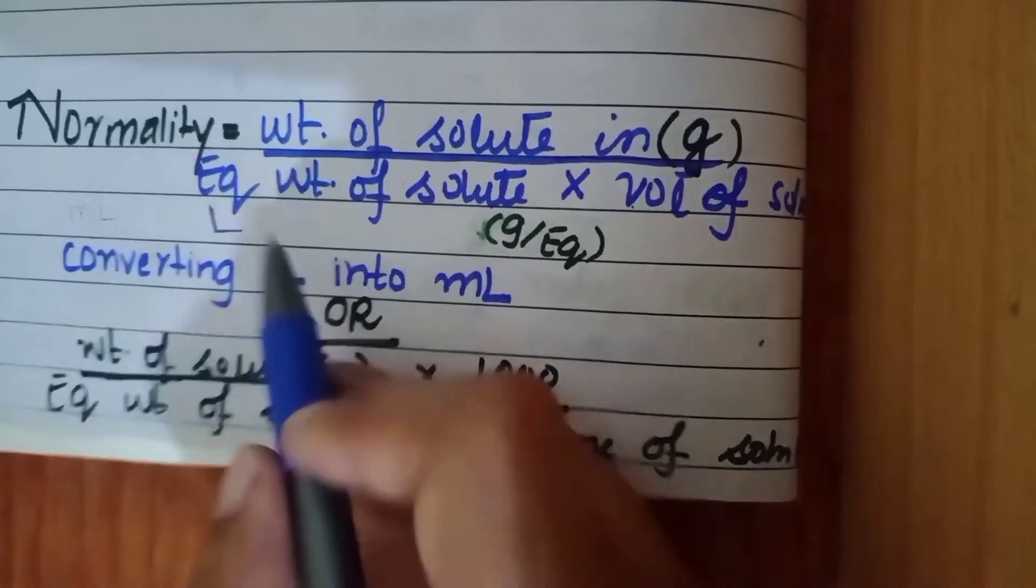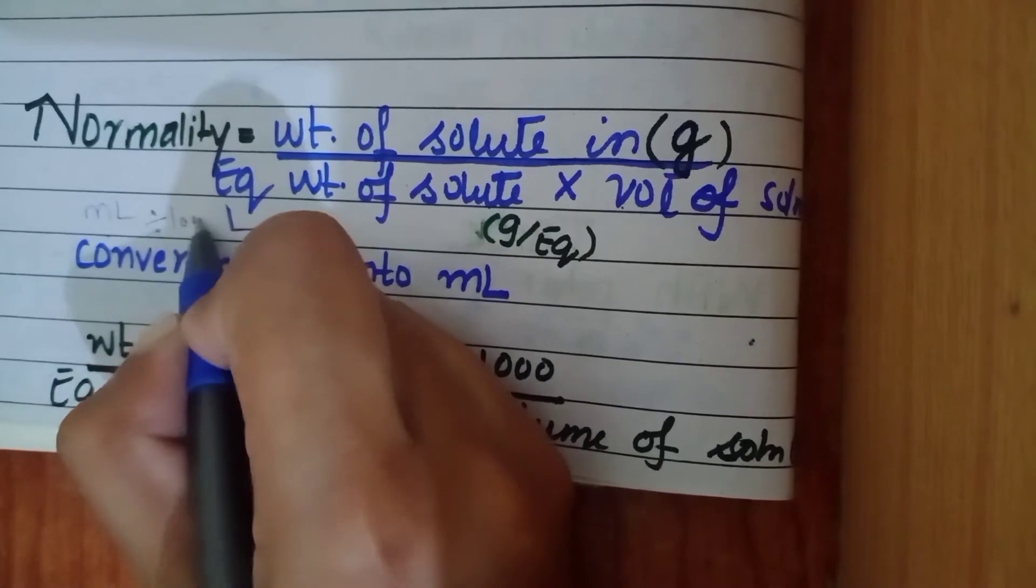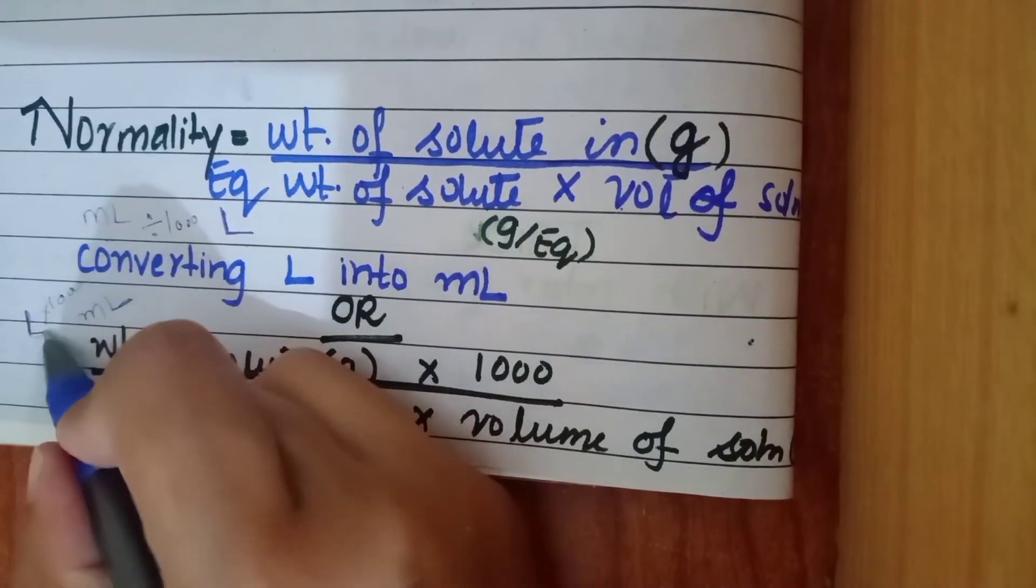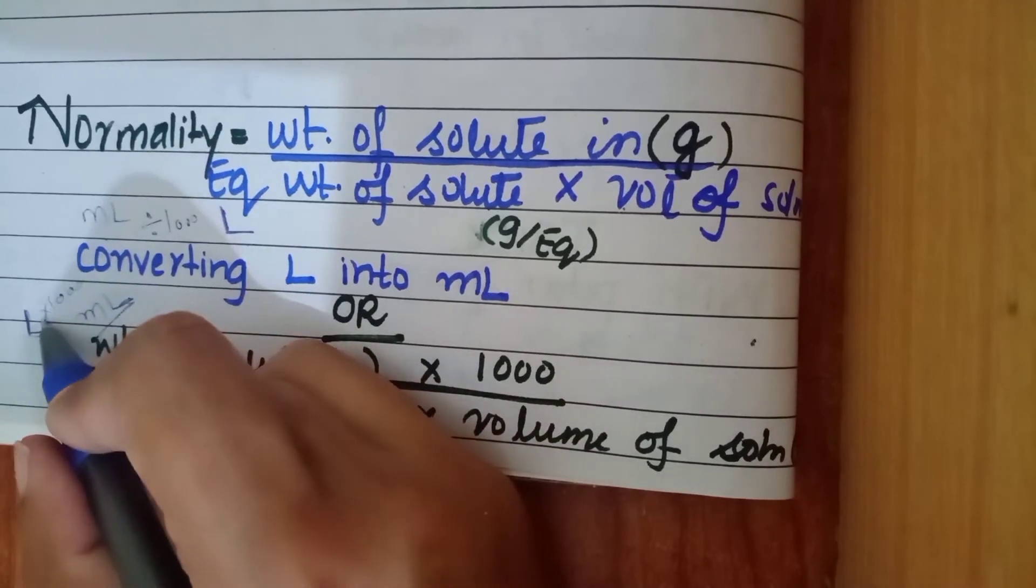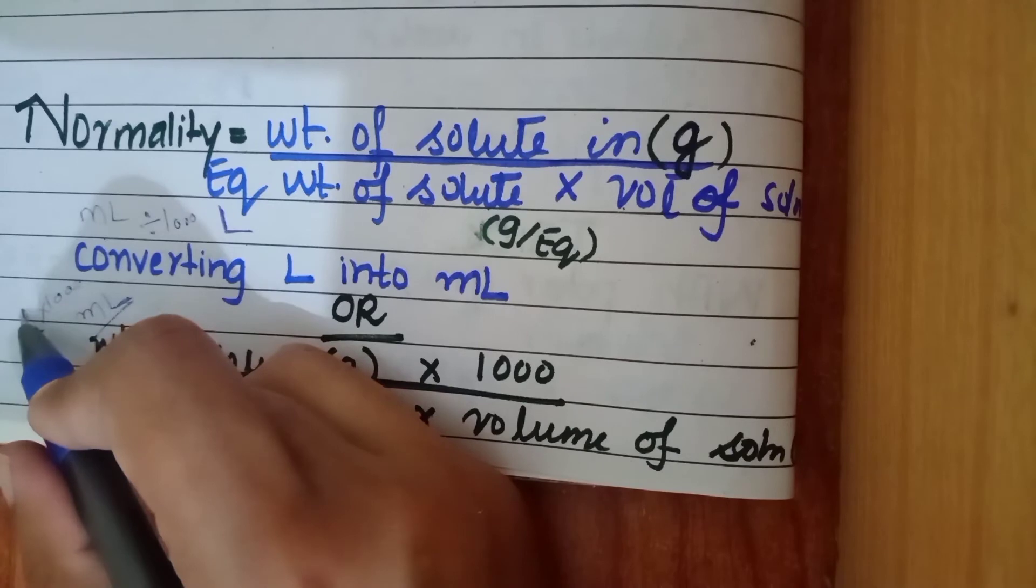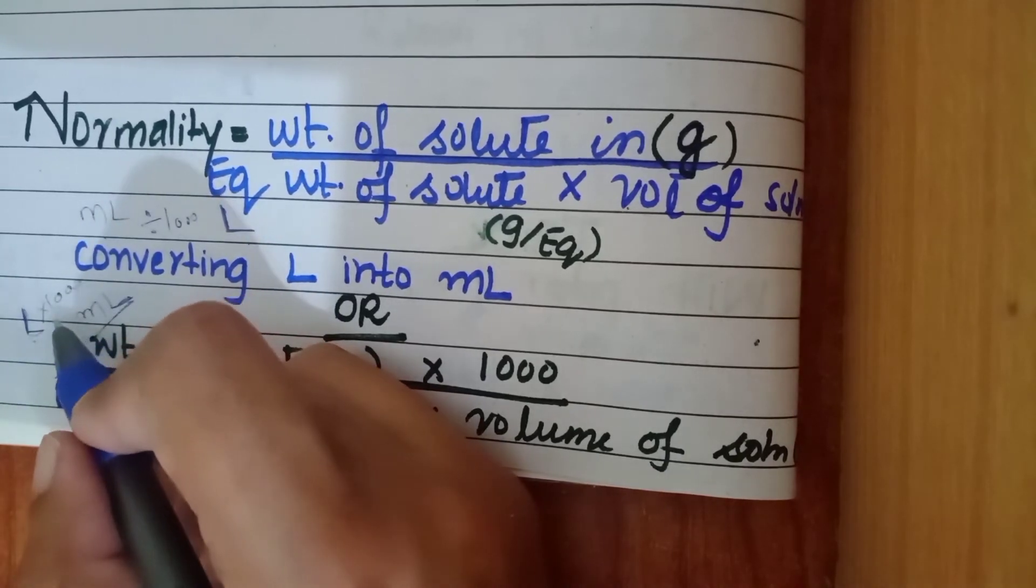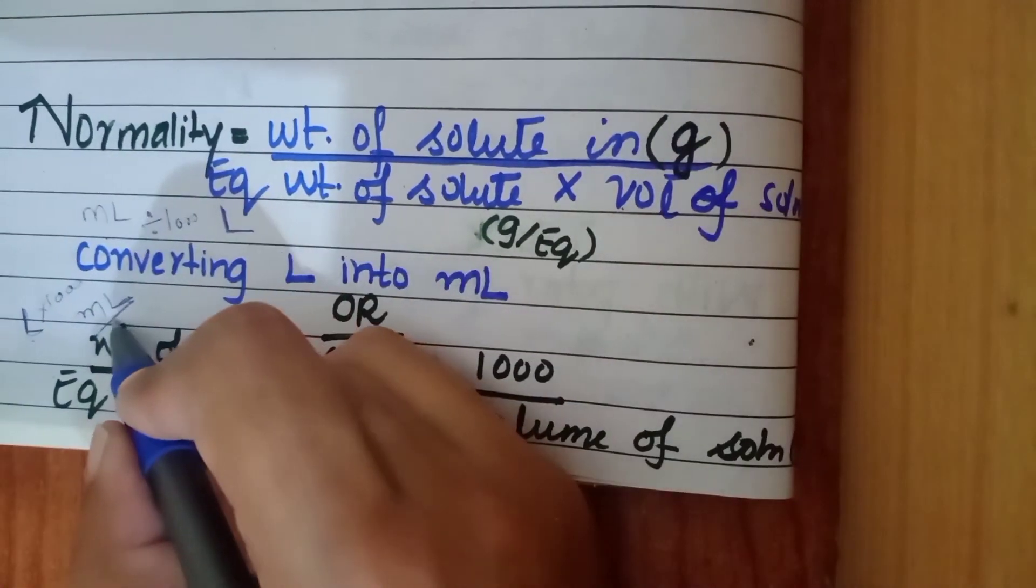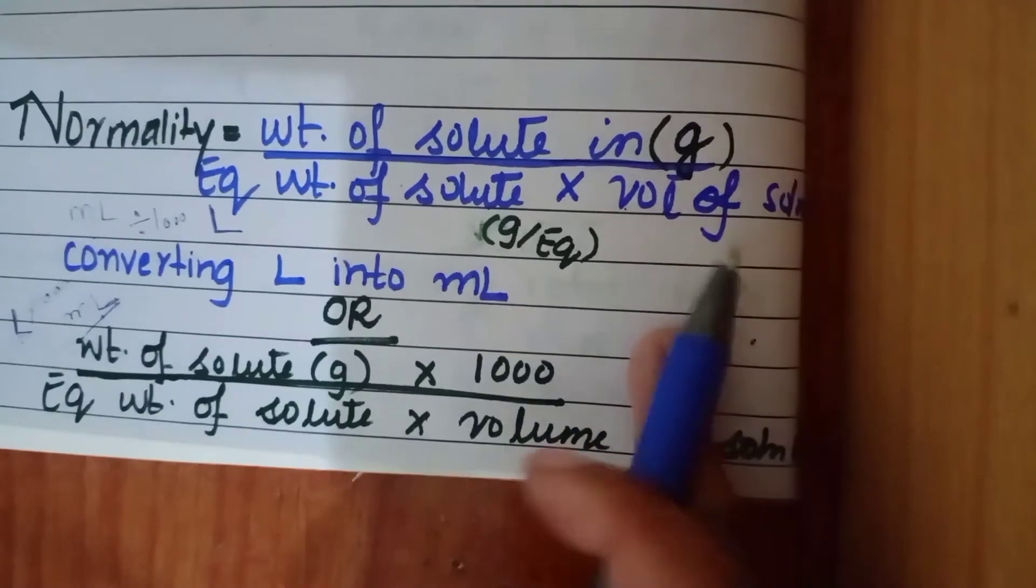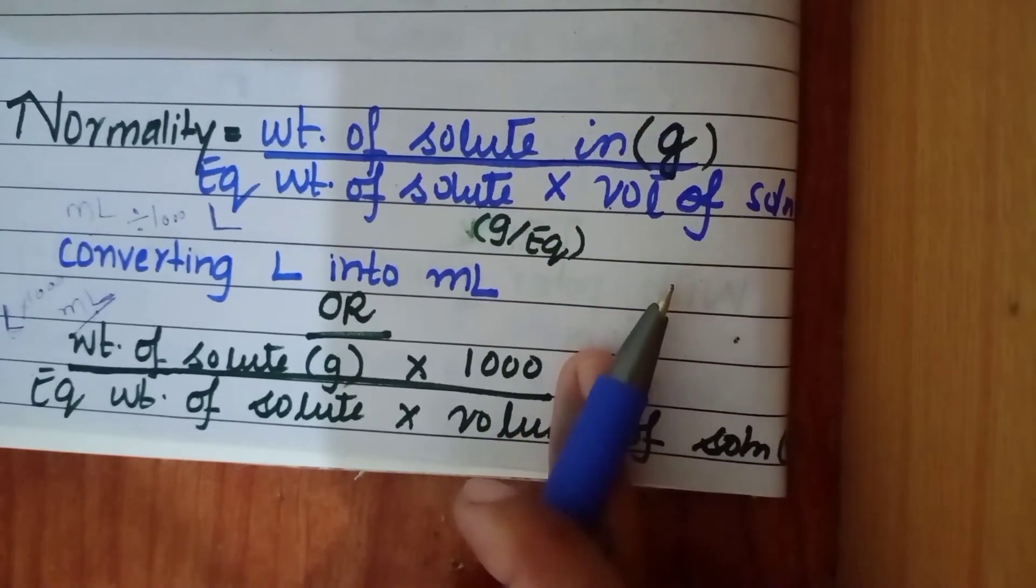When we are going to convert milliliter into liter, we are going to divide it by thousand. When we are going to convert liter into milliliter, we are going to multiply it by thousand. Liter is already a very big thing and we are going to multiply it and it looks as if we are making it big again to convert it into milliliter. So over here this formula, this volume of solution that is in a liter is going to be converted into milliliter.